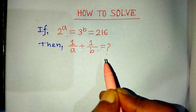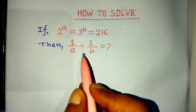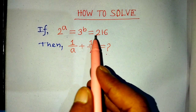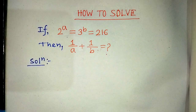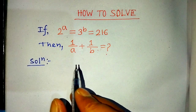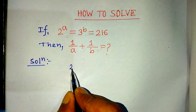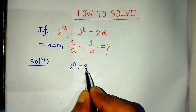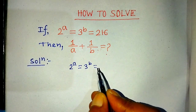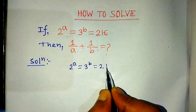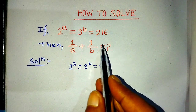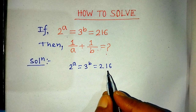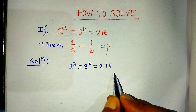In this video, I will tell you how to find the value of 1 over A plus 1 over B from this equation. Our given equation is 2 to the power A is equal to 3 to the power B is equal to 216. To find the value of this algebraic expression, we have to write 216 in exponential form.